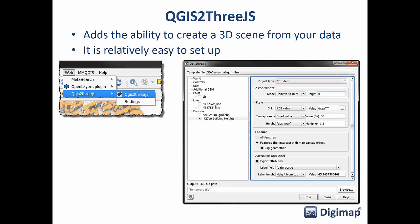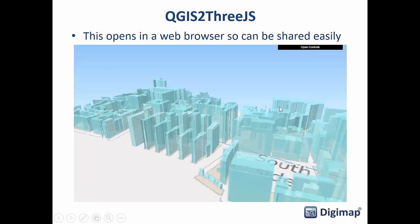qgis2threejs lets you create a 3D scene. In QGIS 3 you can do this natively, but this plugin has been ported to version 3 because it creates a very portable website that you can share easily — either put it on your web server or send a zip folder with all the HTML files. You can browse, click on the map, find out information, zoom, pan, spin, and rotate the scene, all in a web browser. Here you can see buildings extruded up from the 2.5D example, with a control box in the side panel.